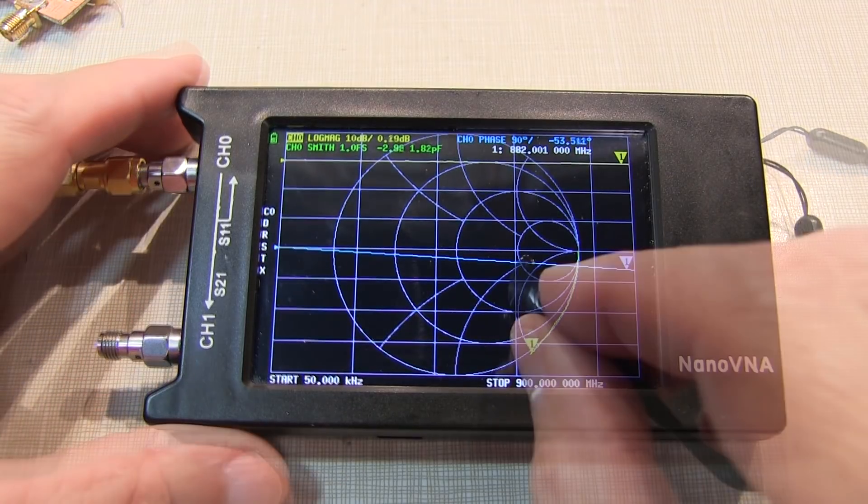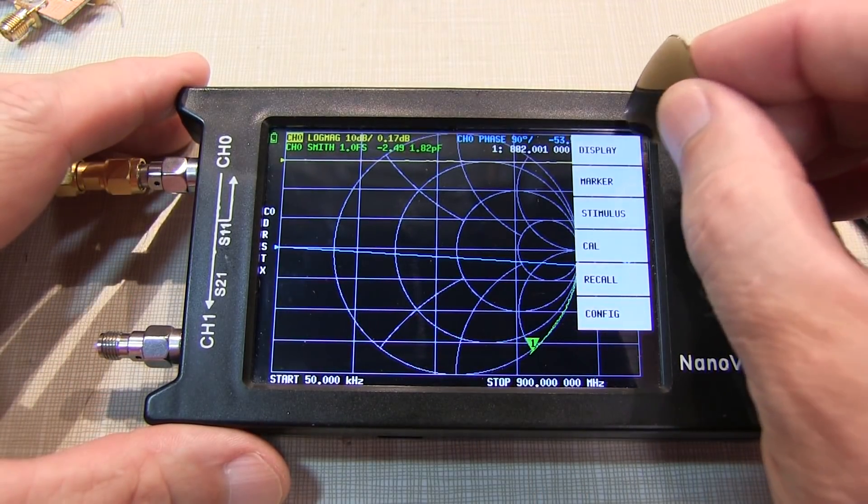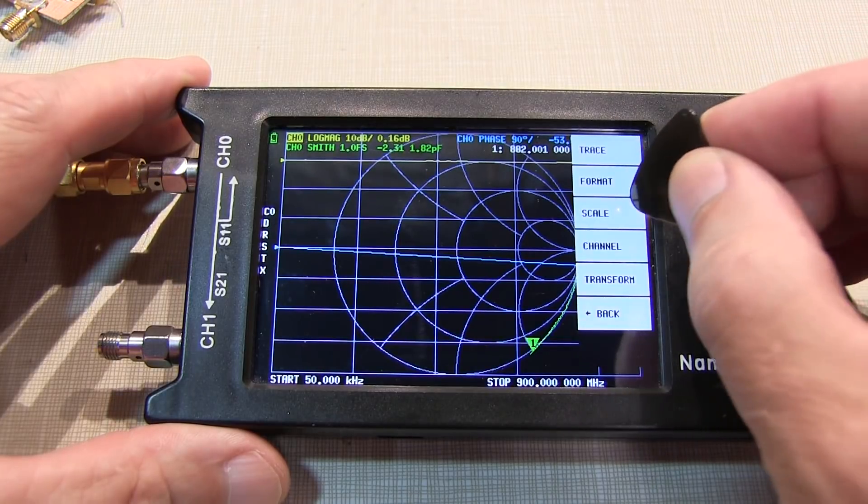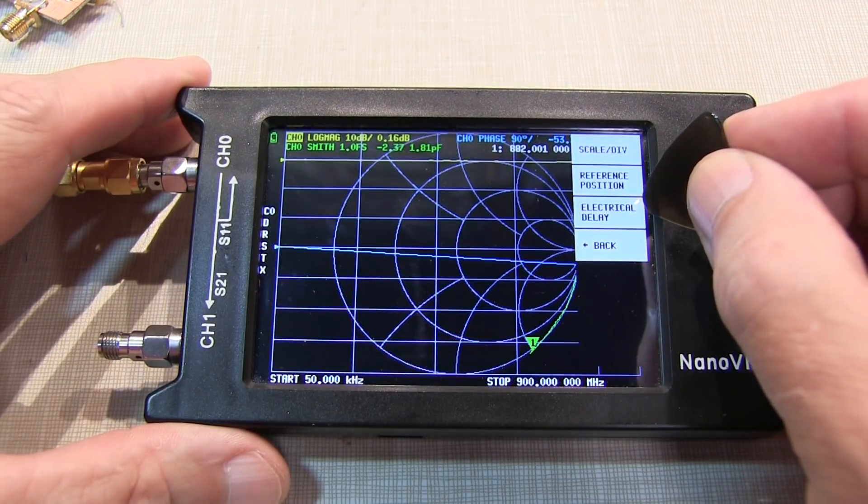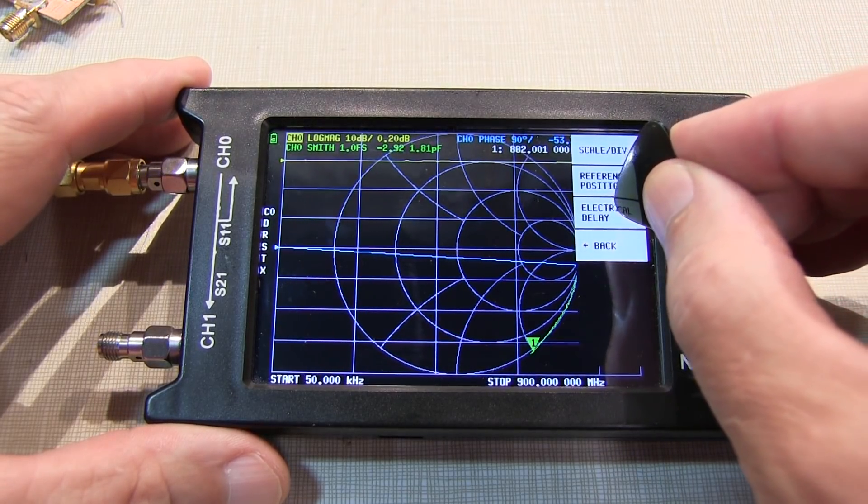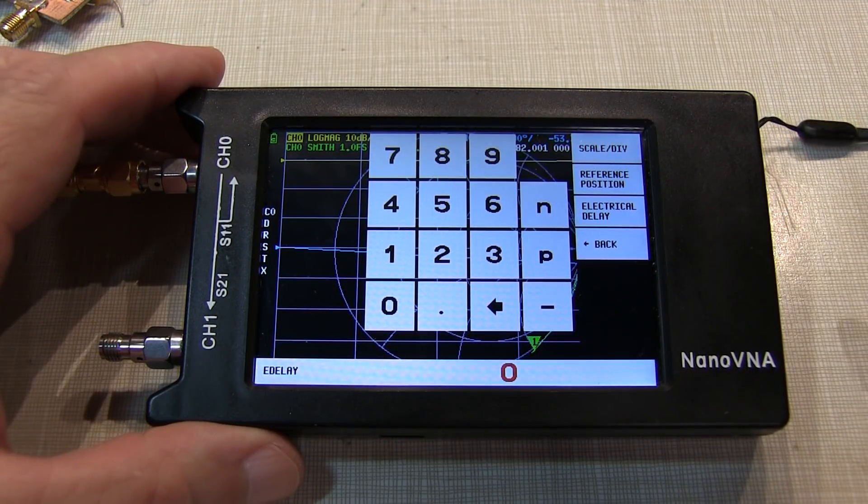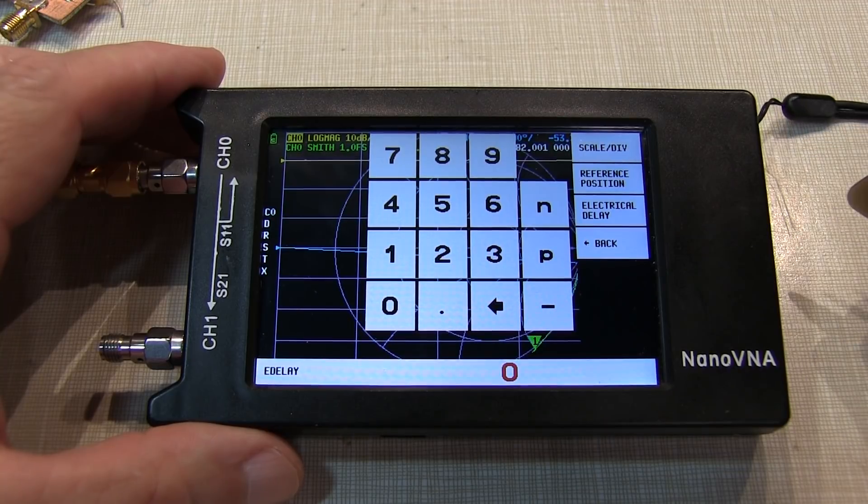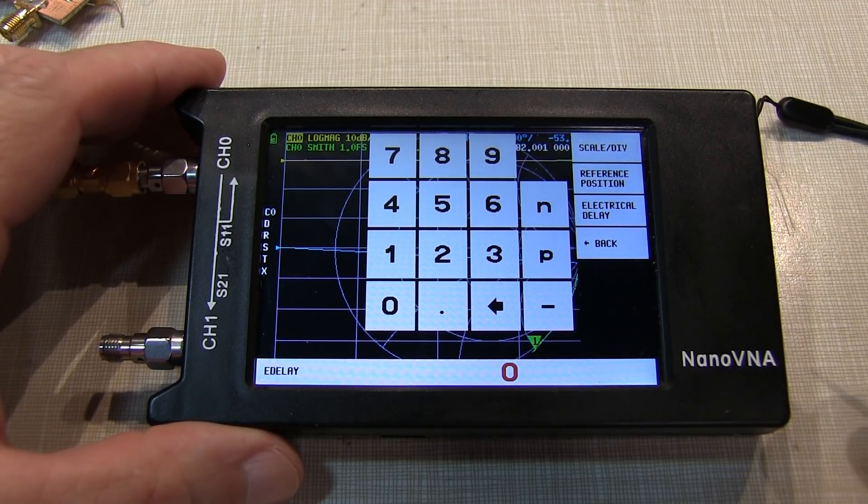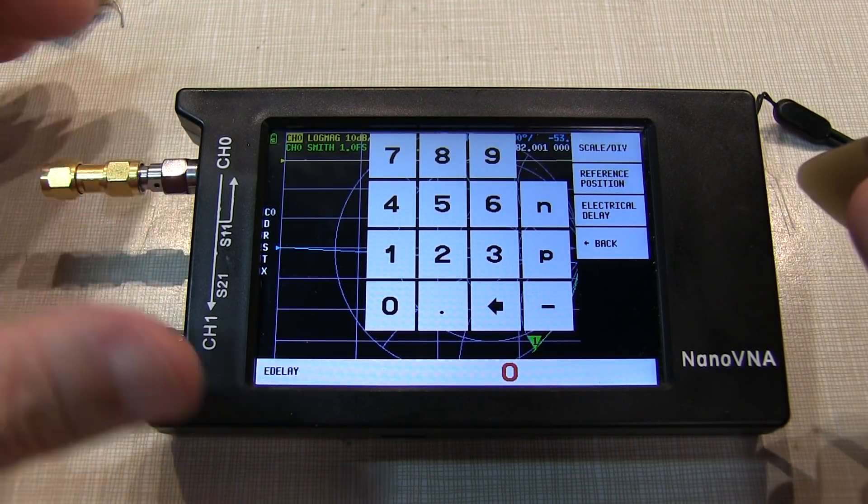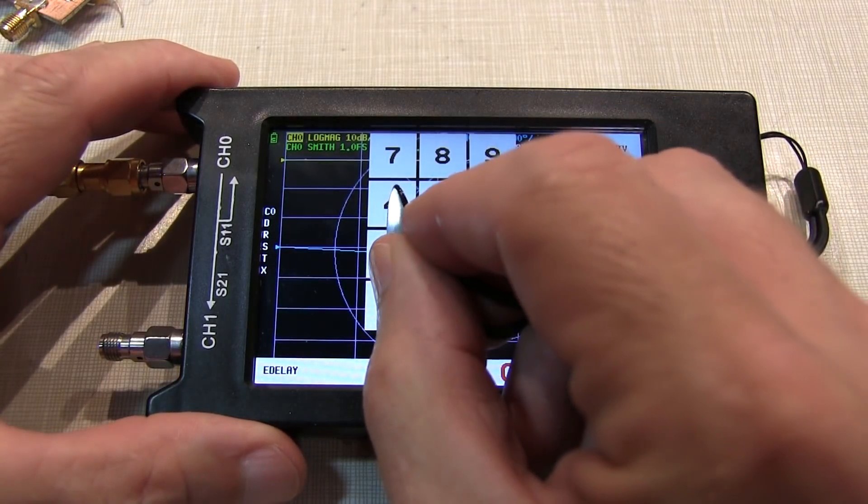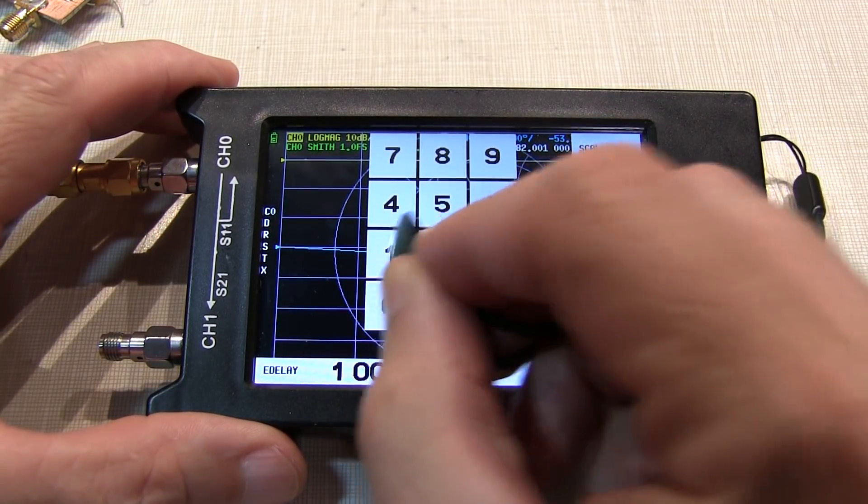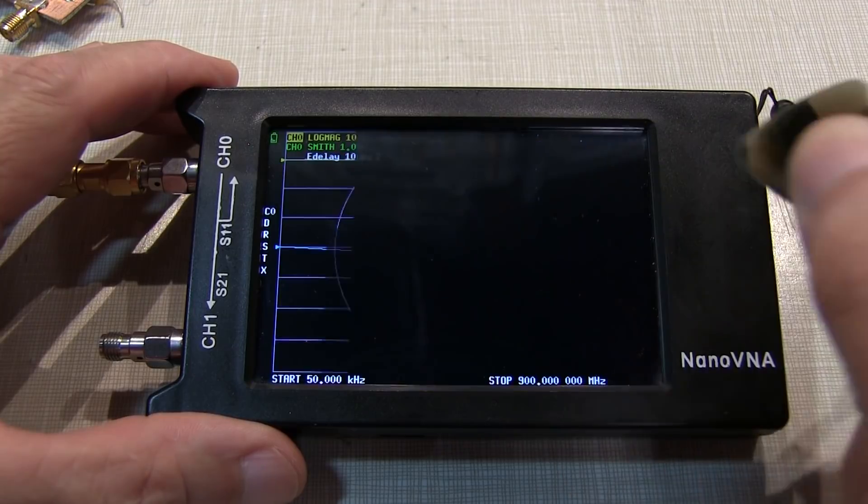So here's how you do that. So we bring up the menu, go to Display, and go to Scale, and this is where we find electrical delay. Now, of course, you can make some measurements and run some calculations to figure out what the exact number should be, or you can just play with it experimentally. So we've got a pretty short little adapter here. Let's just add in, say, 100 picoseconds of electrical delay and see where we wind up.